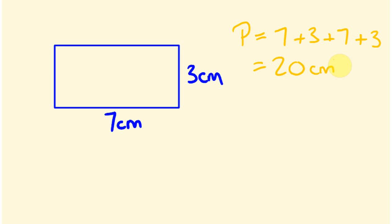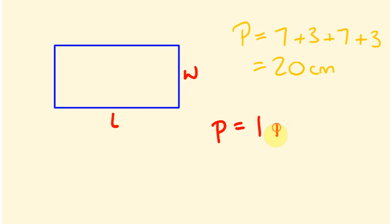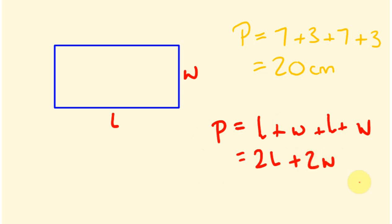Now I'll write it slightly differently. Instead of giving you the actual side lengths, I'll give them as values that can change — the length as L and the width as W. The perimeter would be L plus W plus L plus W. Taking that a step further, we could write it as 2L plus 2W. We've now written this as an algebraic expression instead of putting actual numbers in.